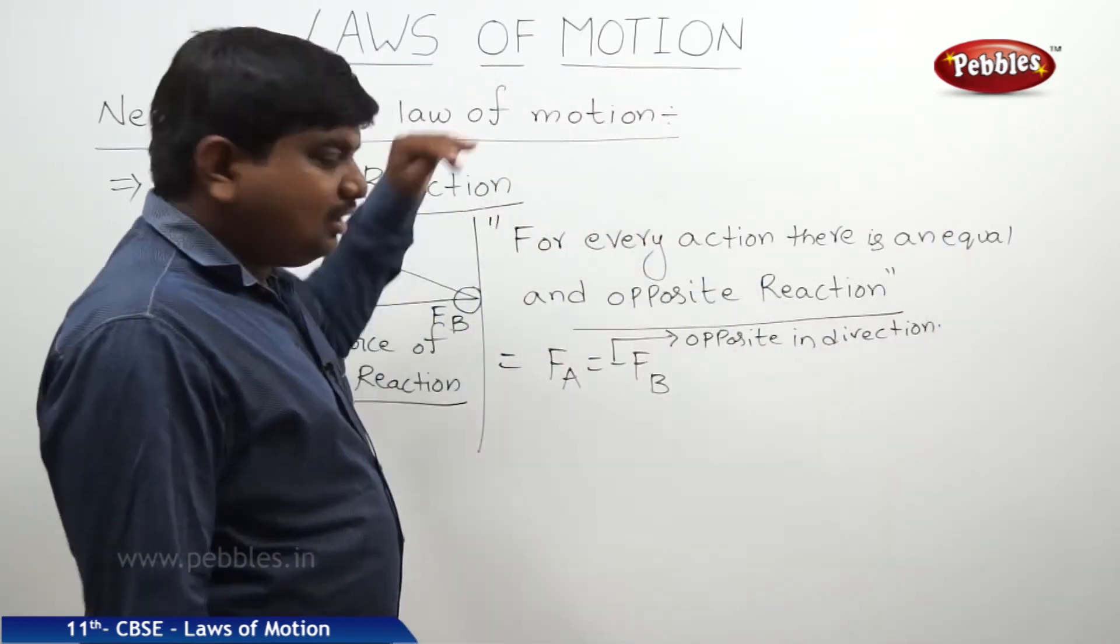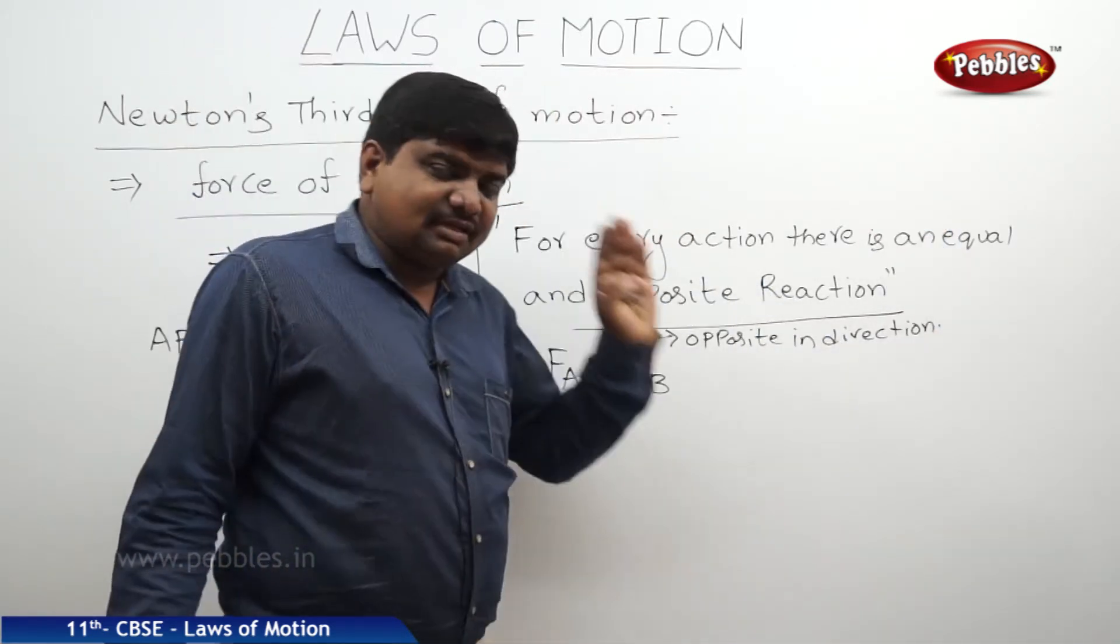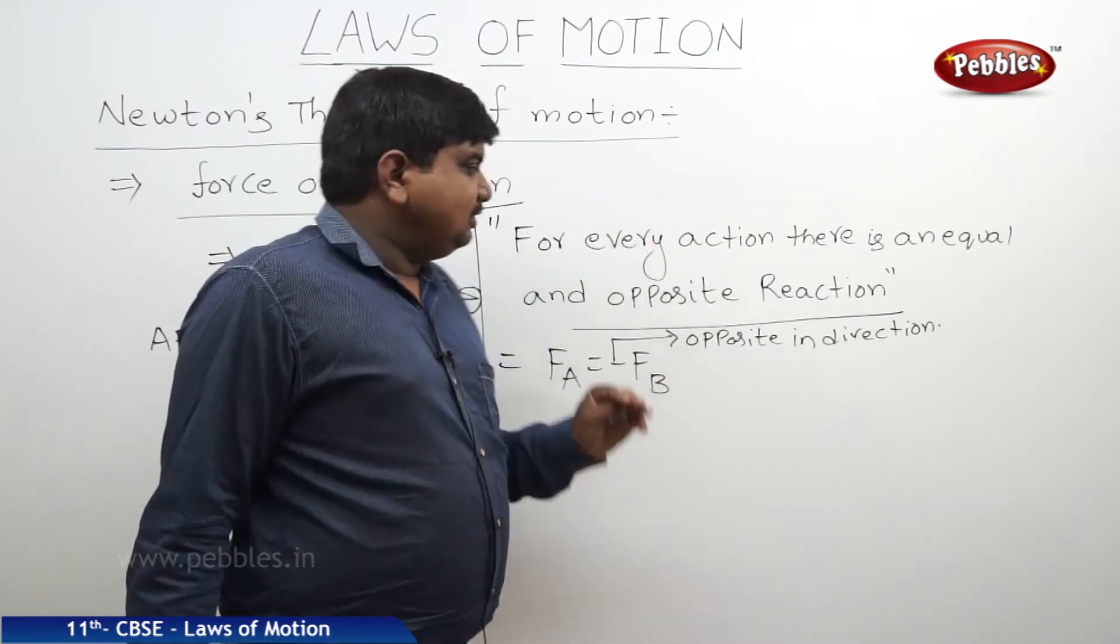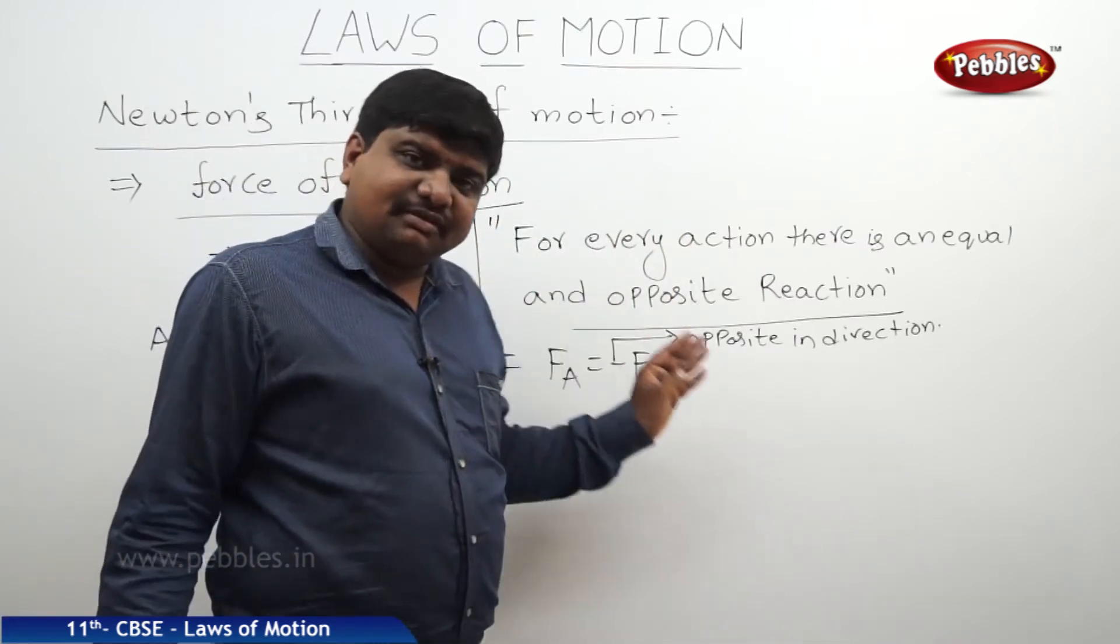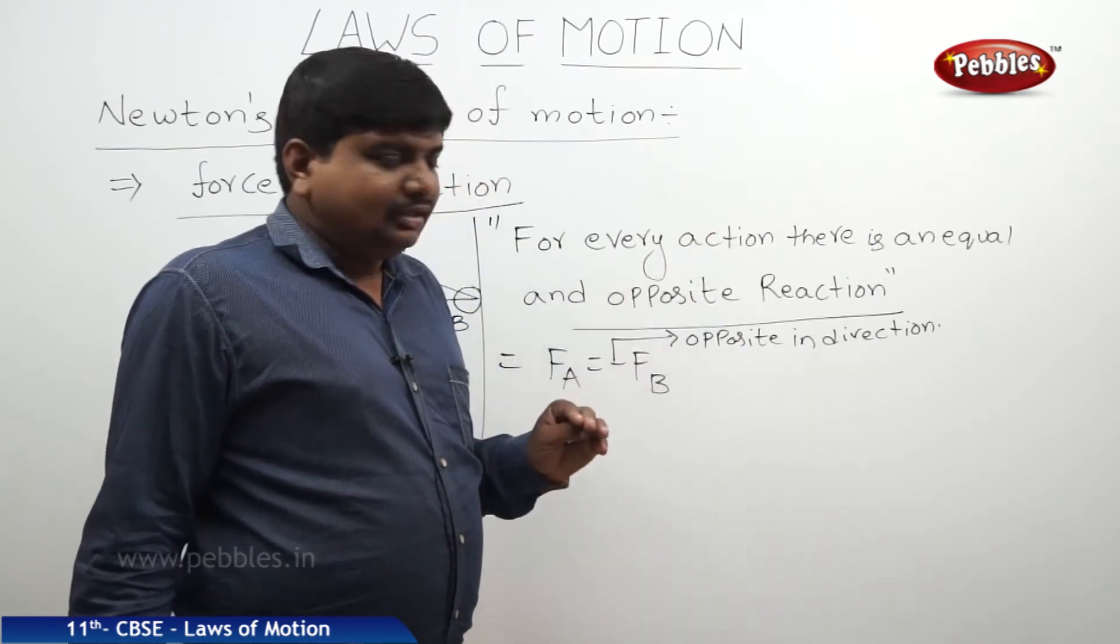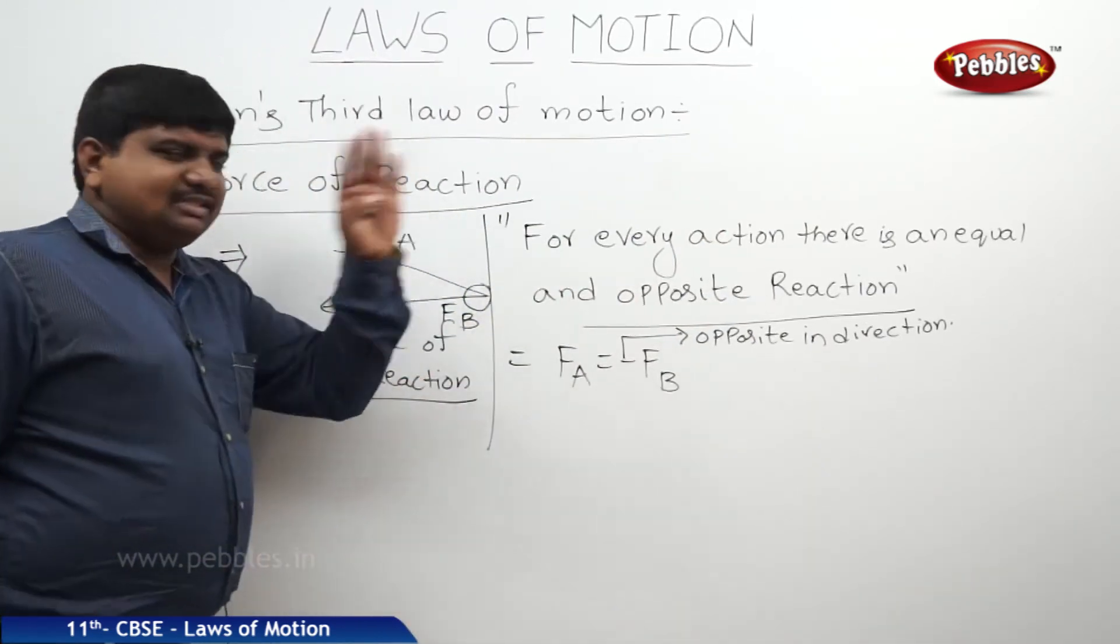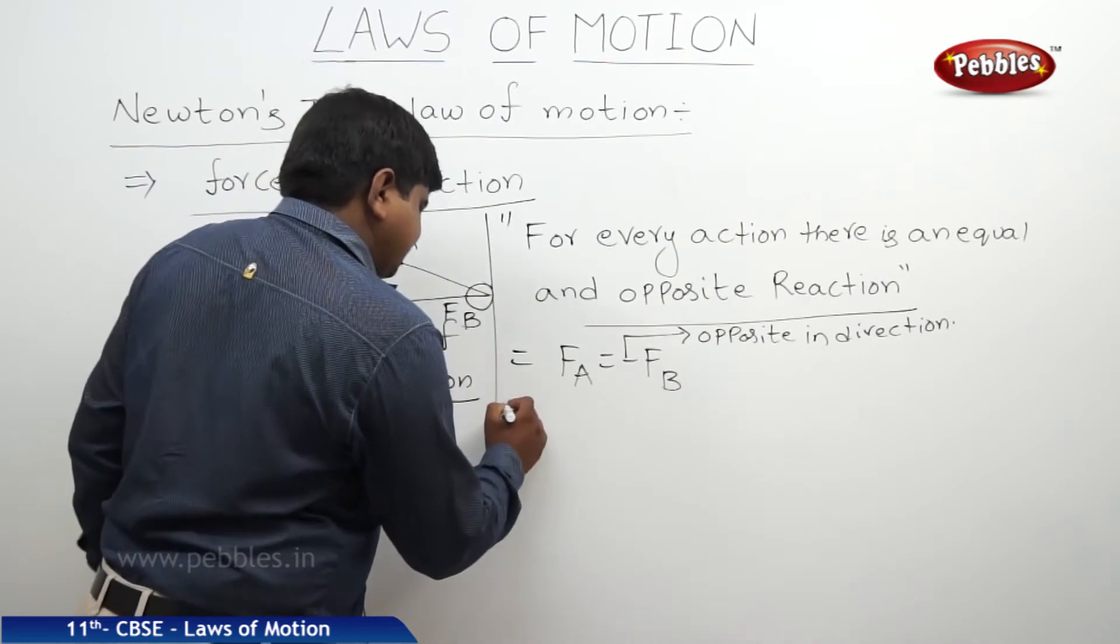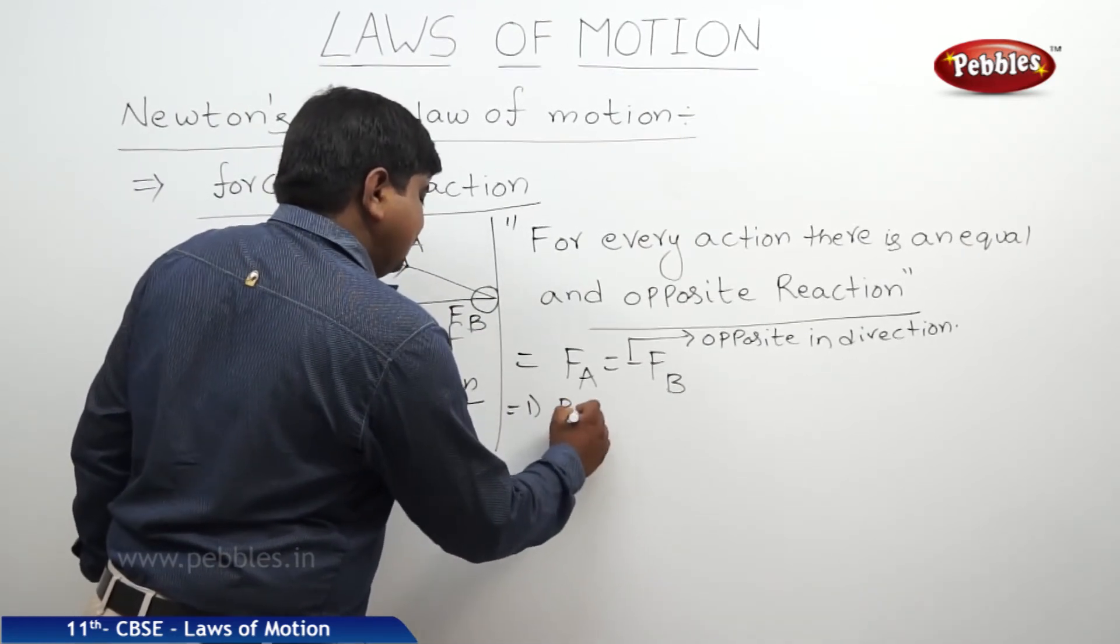This third law of motion has many consequences and many examples. The first example is law of conservation of linear momentum. And the examples of this Newton's third law is first one, recoiling of gun.